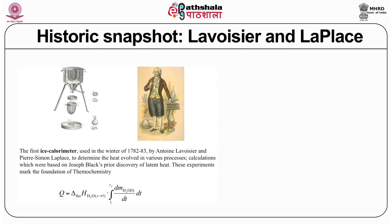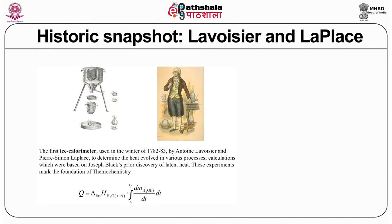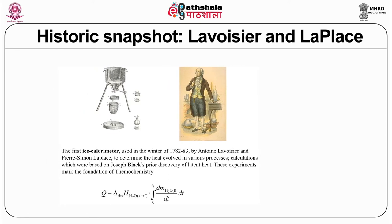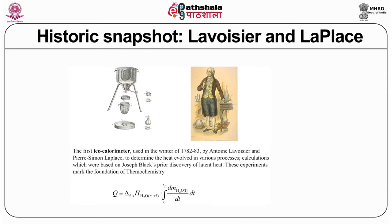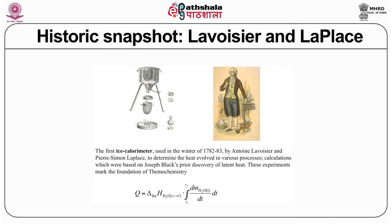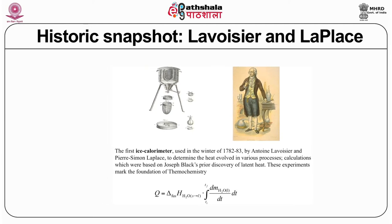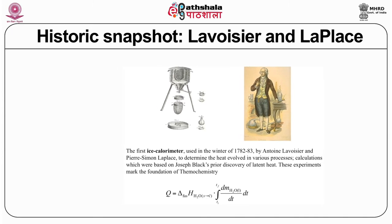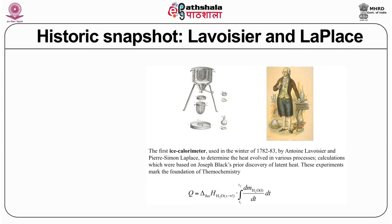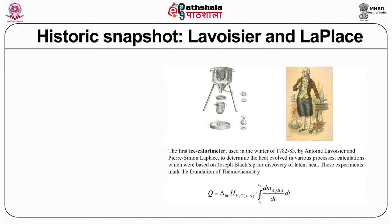This is a very historical slide. Lavoisier and Laplace initially made a simple crude ice calorimeter to determine heat — this tells you how old this field is. Their experiments are classic experiments and have actually generated a new branch of chemistry called thermochemistry. A huge plethora of studies have been done both in chemistry and biochemistry based on these experiments, and it is really remarkable to remember the Laplace and Lavoisier heat experiments.